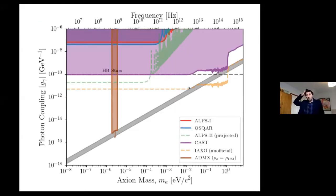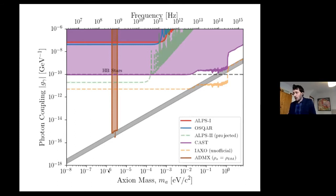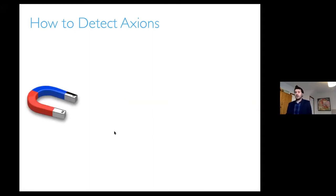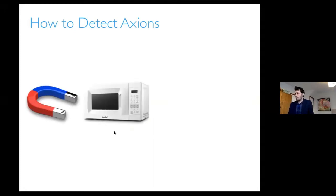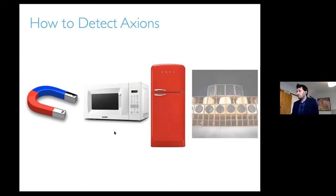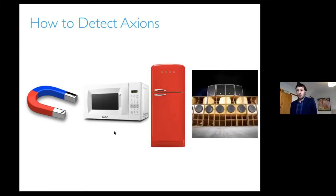ADMX is a long-established, well-running experiment. These are the constraints they get — slightly old — but it reaches the sensitivity to hit the QCD axion band, though in a pretty narrow range around a micro electron volt. The principle we've learned is that you need a magnetic field to facilitate axion-photon conversion, a resonator — in this case a microwave cavity — a fridge to make all your noise very small, and an amplifier to read out your very weak signal.